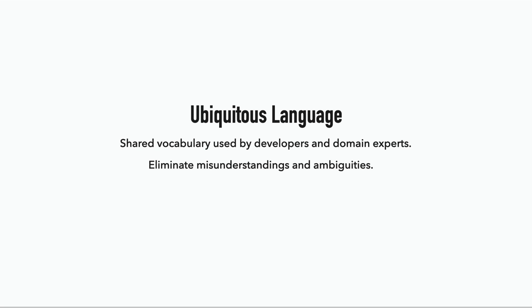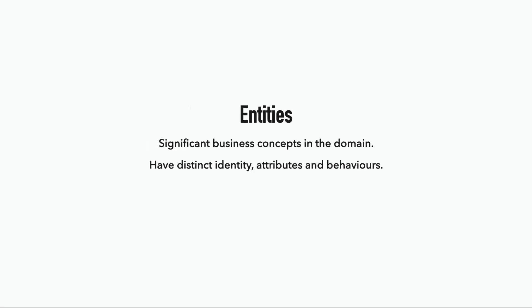The ubiquitous language is used to describe the entities in the domain, which are the significant business concepts such as a customer or an order. And these entities have unique identifiers, such as an order ID, and they come with their own set of attributes and behaviors.